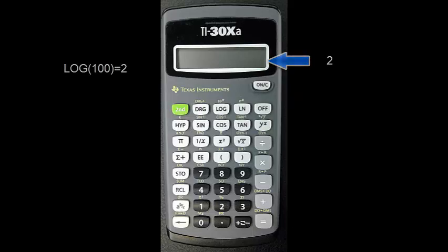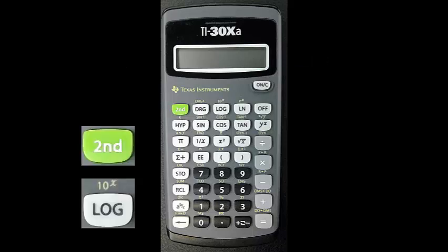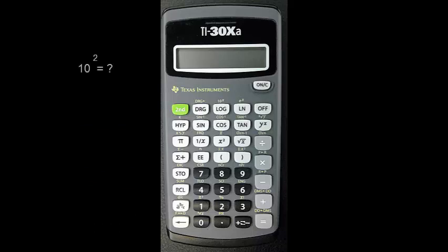The antilogarithm reverses this operation. The antilogarithm of log is the second function of the log button, which reads 10 to the X. To find the antilogarithm of 2, which should still be on your screen, press 2nd and then log. The screen now says 100, which was our original number.